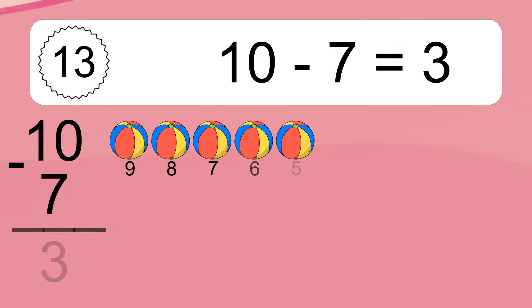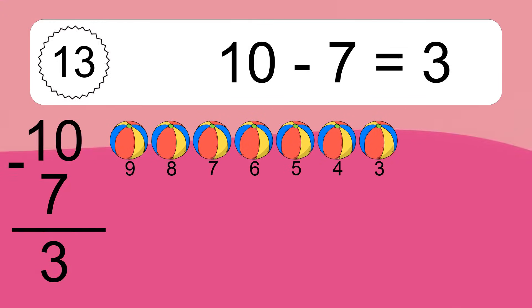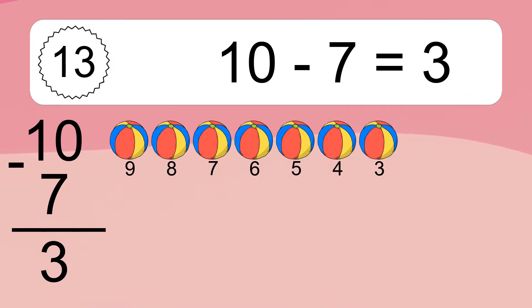10 minus 7 equals what? 10 minus 7 equals 3. Let's count it: 9, 8, 7, 6, 5, 4, 3.